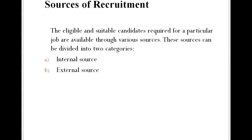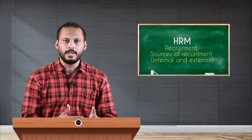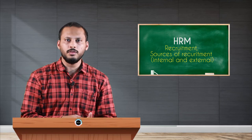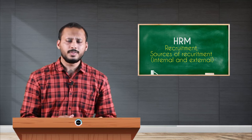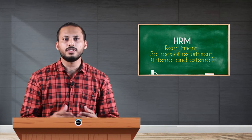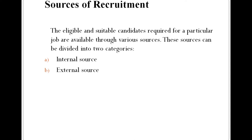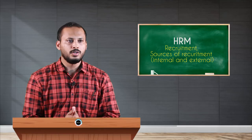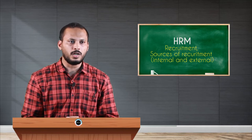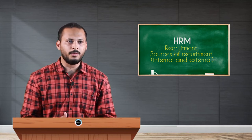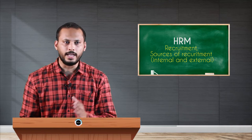So how do we do recruitment? There are two sources from where we can recruit: internal source of recruitment and external source of recruitment. Internal means getting candidates who are already working within the organization, while external means getting applications from people who are not current employees. The eligible and suitable candidates required for a particular job are available through these two categories of sources.